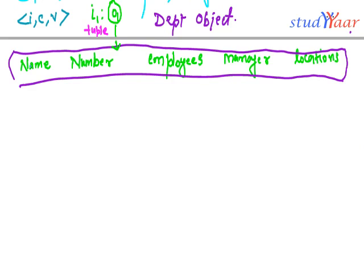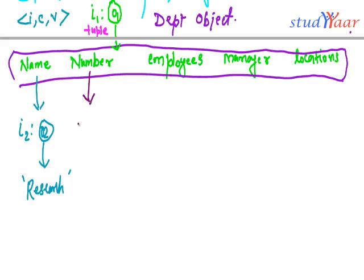The V value is the value of this object, and the C value is 'tuple' since this is of type tuple. So this is my ICV representation: the value is represented by an arrow pointing to the tuple, the ID is represented by I1, and C is represented by 'tuple'. Inside this tuple, I have the name. Name again is an object — let's call it I2, with object O2, which stores the name of the department. Let's call this department 'Research'. Then number is also an atomic object with another ID — let's suppose O3 — and this stores the department number, say 1256.